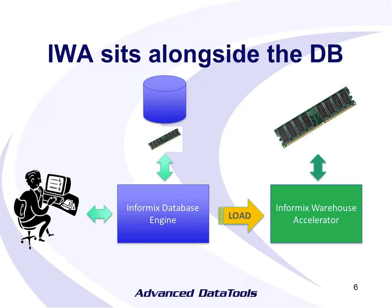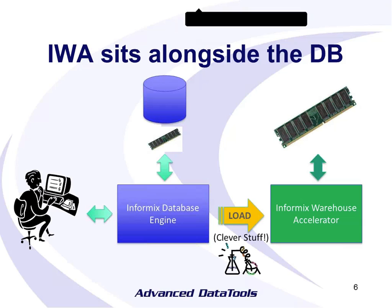The first thing you need to do is load some of your data from your database into the accelerator, where it gets compressed into memory — lots of clever stuff happens. That's where all your data is compressed, optimized, it uses columnar storage, and so on. Part of your subset of your database is now residing in memory.